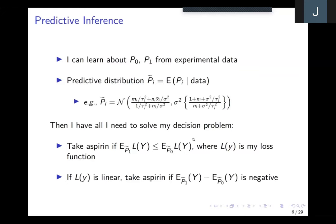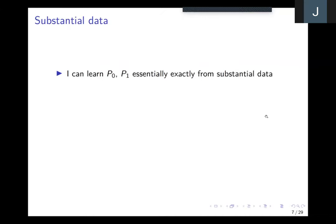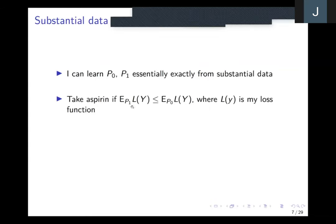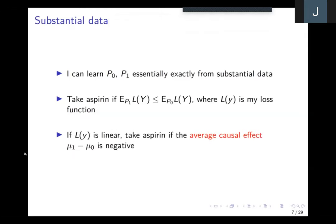I'm going to consider the case where we really have lots and lots of data and uncertainty is not an issue, so I can imagine I can learn p0 and p1 pretty much exactly. From now on I'll assume the probabilistic structure of the problem is entirely known. Therefore I can use p1 and p0, and all I need is those distributions. With a linear loss I just look at the average causal effect: if mu_1 minus mu_0 is negative — meaning mu_1 is less than mu_0 — that's good, so I'll take the aspirin.